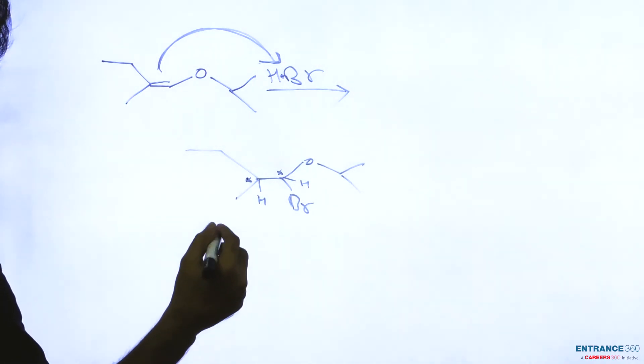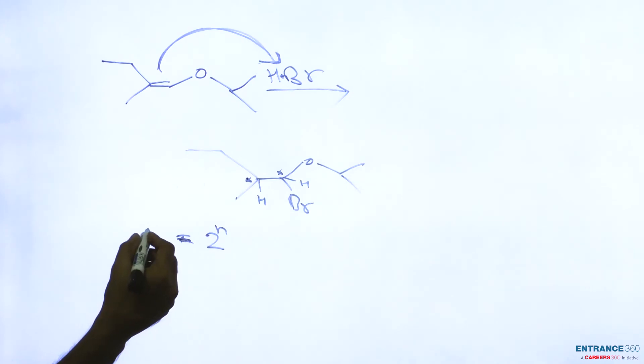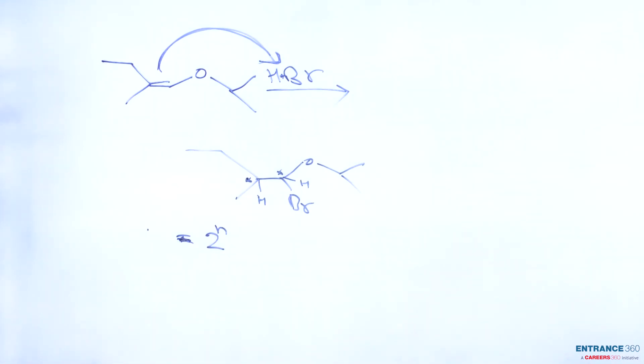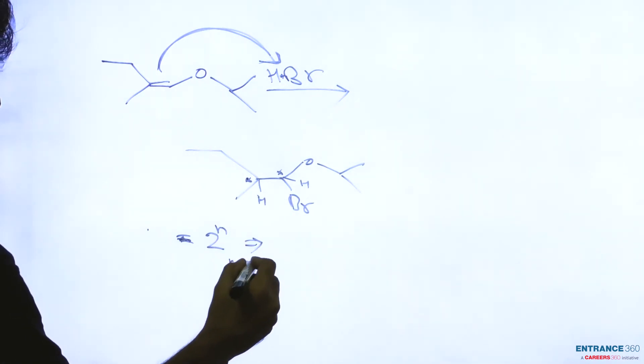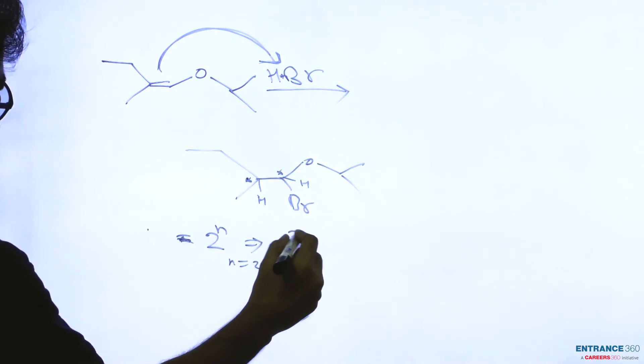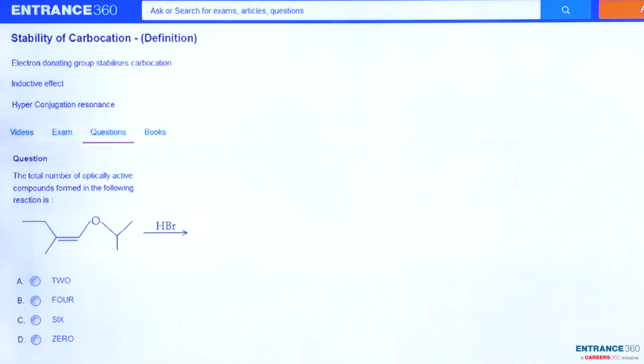Our formula is: the total number of optically active products equals 2 to the power 2n, where n is the number of chiral centers. There are two chiral centers, so n will be 2. The total will be 2 to the power 2, which means 4. So there are 4 optically active products. Our correct option is going to be option B, 4.